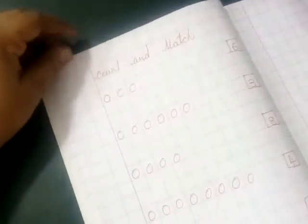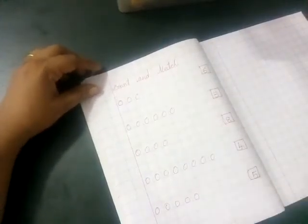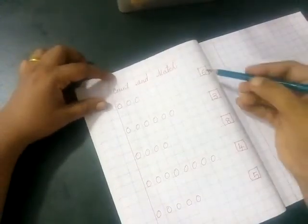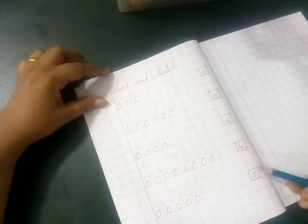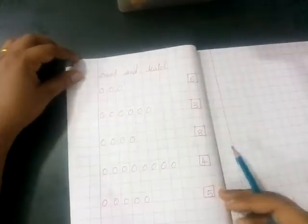Okay, now let's count and match this one. I drawn here some balls. As you see here, isn't it? And here are given some numbers in the box. Let's count the balls and then match.